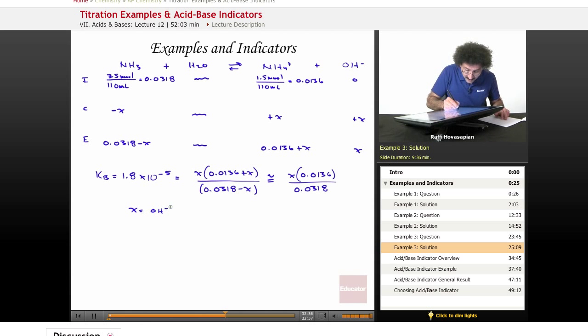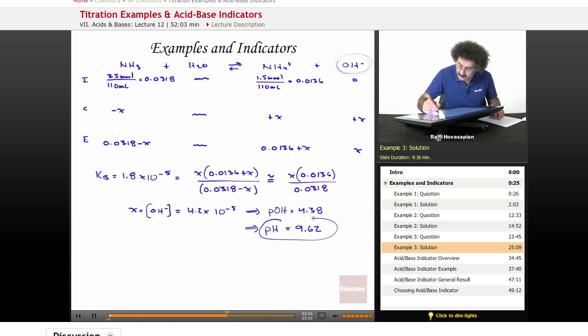Okay, equals X times 0.0136 divided by 0.0318, which in this case is the hydroxide ion concentration. Keep track of the species that you're dealing with. Don't lose your way. It equals 4.2 times 10 to the negative 5. When we take the negative log of that, we get a pOH of 4.38, which implies that the pH is 14 minus that. You get 9.62. That's it. Very, very nice.